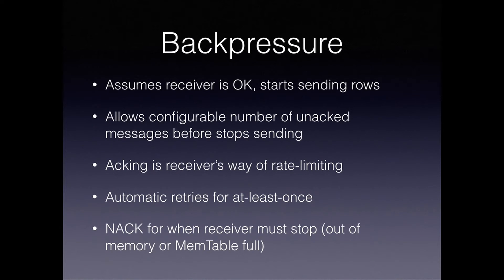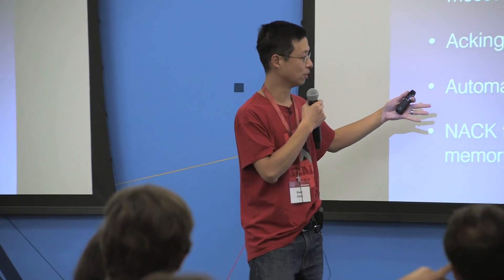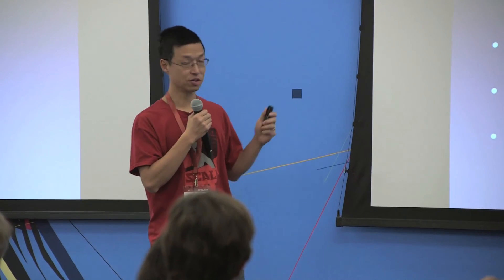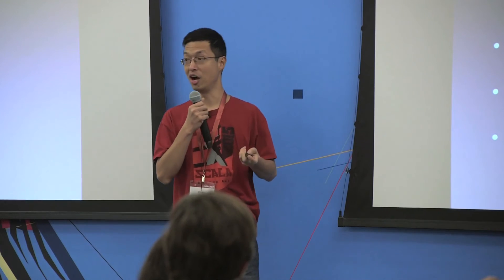We built FiloDB before Akka Streams was really mature, so we had to bake in our own protocol for at-least-once delivery and back pressure. We use ACKs as a way of slowing down the data, and we also built in a retry mechanism so that if we don't get an ACK back within a certain timeout, we resend the data. Akka's built-in scheduler is really useful for this.